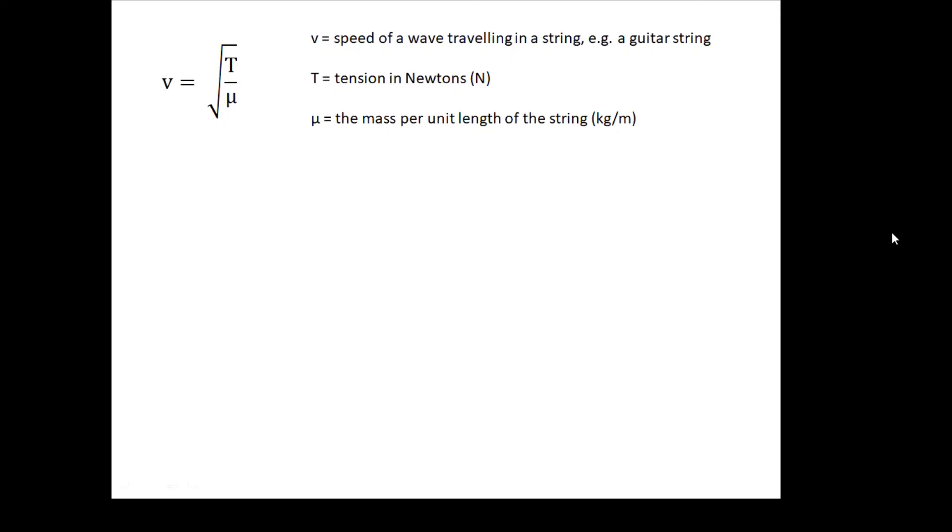Now one thing to be careful with: if you are given the mass per unit length in grams per meter, that won't do. You have to change it to kilograms. One gram is 1 × 10^-3 kilograms. For example, if it said the mass per unit length was 3 grams per meter, then on your calculator you put 3 × 10^-3. It has to be in kilograms per meter. Usually it will give you it in kilograms per meter, but just in case.